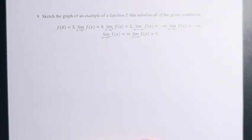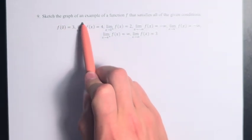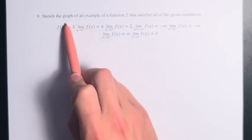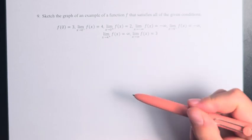Hello and welcome back to another video. In this problem, we're asked to sketch the graph of an example of a function f that satisfies all of the given conditions. We have f of 0 is equal to 3, and we have the following limits.